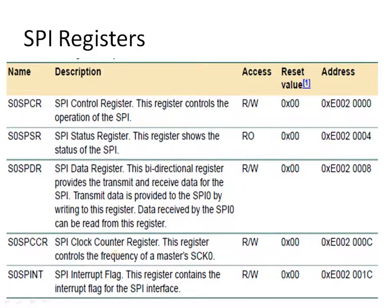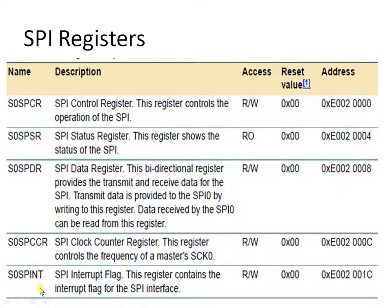Now let us see the registers we need to program inside the SPI peripheral. These are: SPCR (serial peripheral control register), SPSR (status register) — by which we can monitor whether transmission or receiving has completed successfully — SPDR (data register), which is similar to the buffer register in asynchronous communication (the user can only access the data register, not the internal shift register), a clock counter register for setting the transmission frequency, and an interrupt flag register.